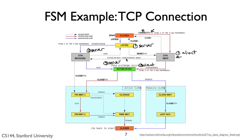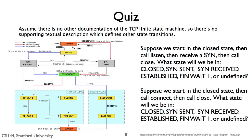Here's a quiz. For this quiz, assume there is no other documentation of the TCP finite state machine — no supporting textual description which defines other state transitions. In the first question, suppose the finite state machine starts in the closed state. Then the user program calls listen on the socket. The socket receives a SYN message. Before any other event arrives, the user program calls close. What state will the socket be in? For the second question, suppose the FSM starts in the closed state. Then the user program calls connect. Before any other event arrives, the user program calls close. What state will the socket be in?